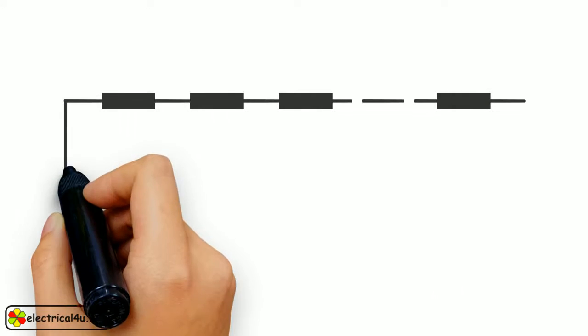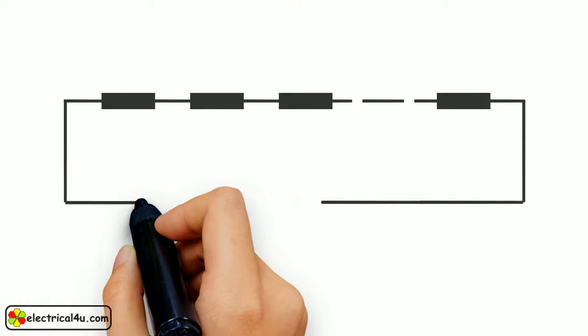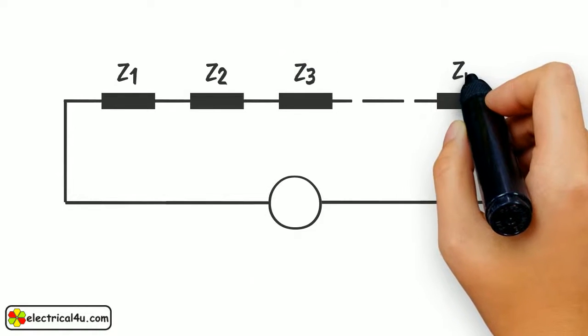Suppose the impedances Z1, Z2, Z3, up to Zn are connected in series, and voltage source V is connected across them, as shown. The aim is to find the voltage across any of the impedances, say Z3.